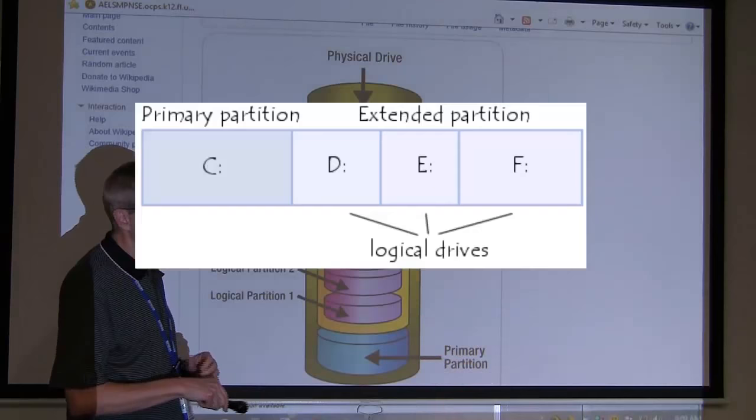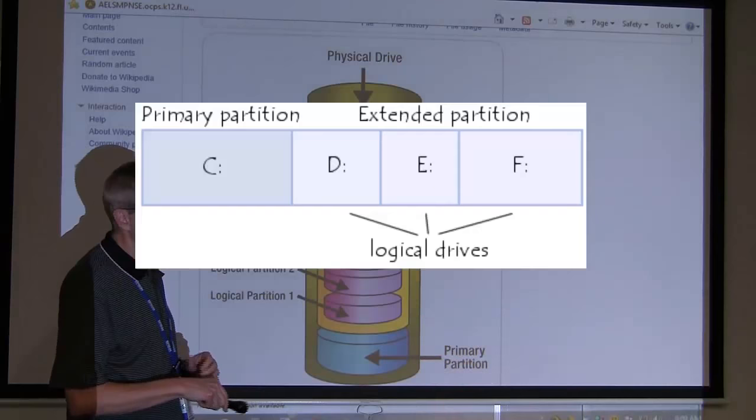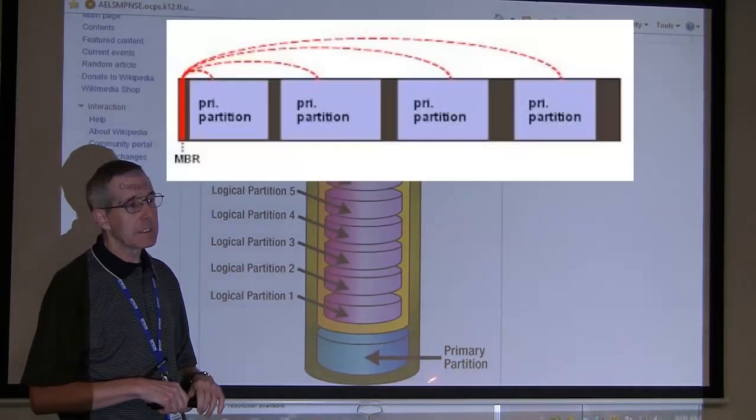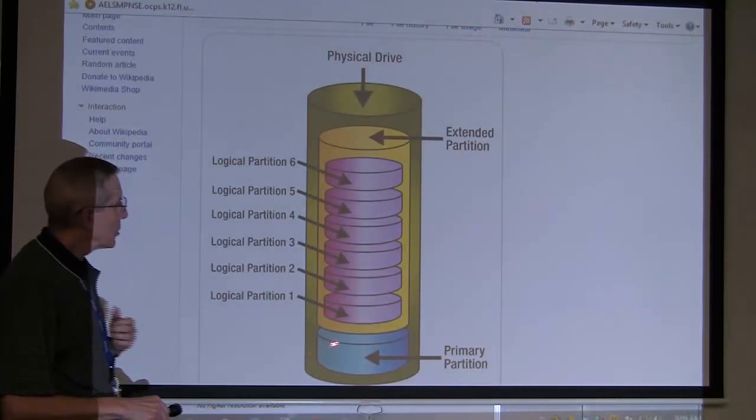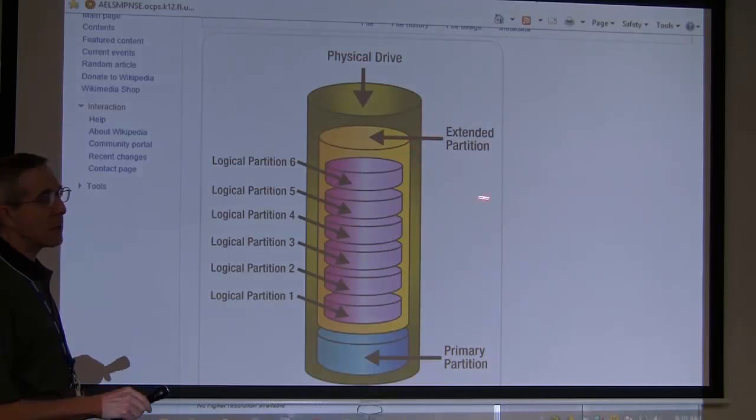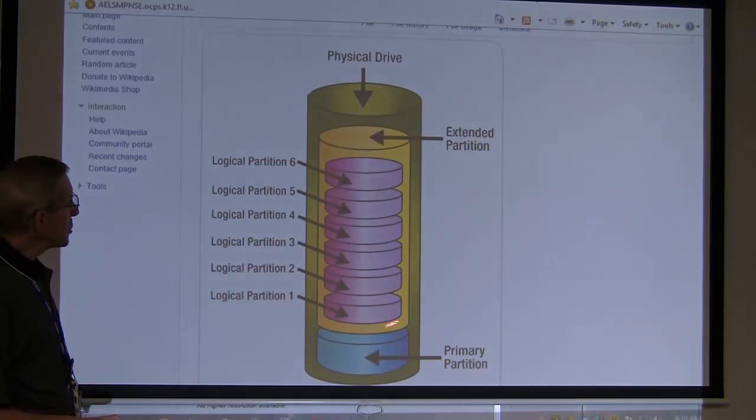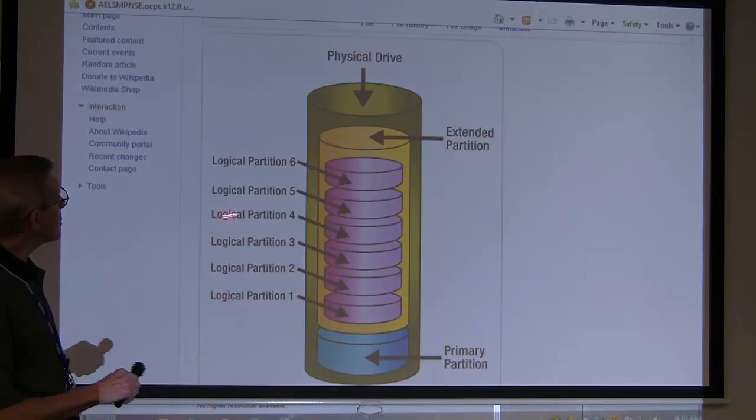I want you to write down primary partition. You can have up to four. This is what you've got to know for the CompTIA. You can have up to four primary partitions in the old PC BIOS Master Boot Record partition system. You could have one, only one, extended partition. Once you've created an extended partition, then you've created logical partitions.